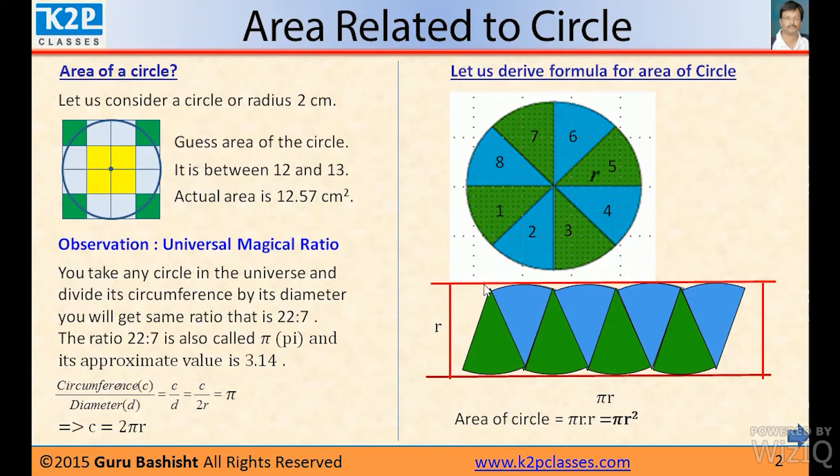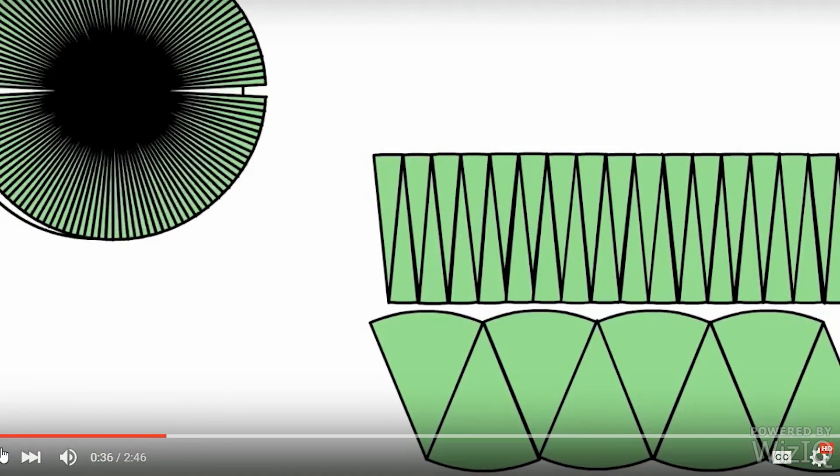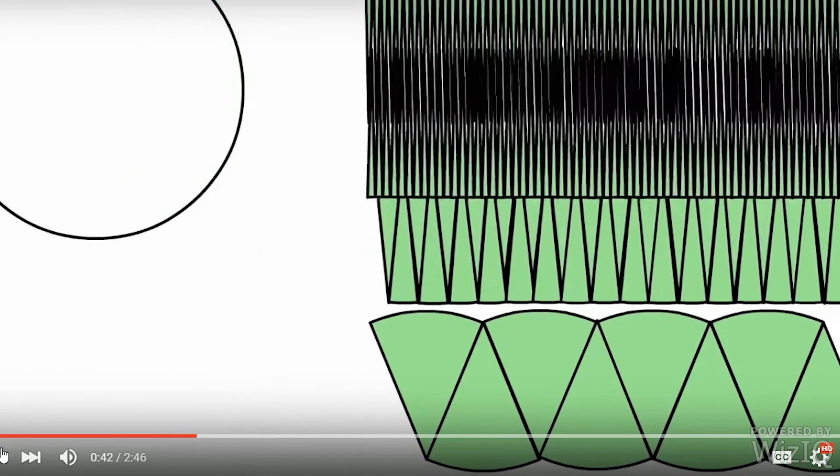This is almost a rectangle. Since its circumference is 2πr, this side will be 2πr and this is r. So area of this rectangle equals length times breadth, that is πr. 2πr means from this side and this side - both sides added will be 2πr, so one side will be πr. So πr × r equals πr². So here we now know how and what area of a triangle is πr².